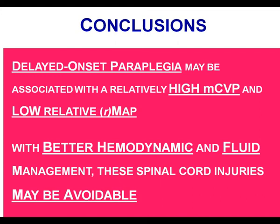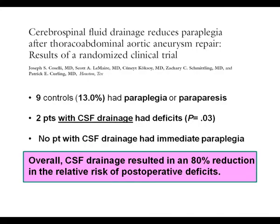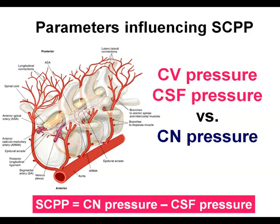To optimize spinal cord perfusion pressure we need to control three parameters: central venous pressure, CSF pressure, and collateral network pressure. A randomized trial by Joe Coselli showed that CSF drainage resulted in an 80% reduction in the relative risk of postoperative deficits. To measure these parameters directly, we introduced a small 3F pressure catheter placed in the stump of a segmental artery.